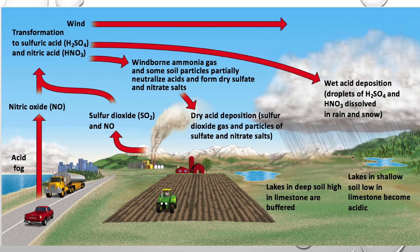Looking at another image showing where acid rain comes from: nitrogen oxides enter the atmosphere and can also form acid fog, transforming into sulfuric acid and nitric acid. Sulfur oxides entering the atmosphere can come from industries, agricultural sources, and vehicles. Wind carries the sulfuric and nitric acids across regions. Windborne ammonia gas and soil particles can sometimes neutralize the acids, forming dry sulfate and nitrate salts — causing dry acid deposition. Wet acid deposition occurs when sulfuric and nitric acids dissolve in rain and snow and eventually reach lakes.